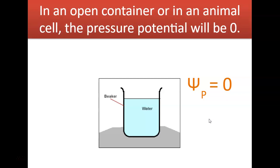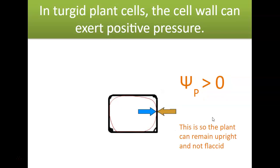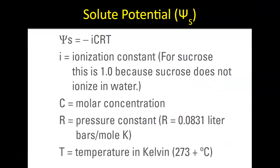In a perfect situation, an open container will have a pressure of zero, which is where animal cells want to be — no additional pressure pushing one way or the other. Plant cells, however, do have positive pressure, which is how a plant can remain upright against low water conditions and avoid becoming too flaccid.